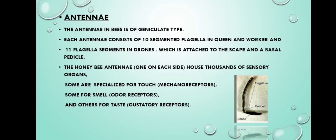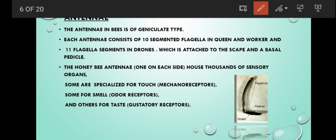Antenna: the honeybee antenna is geniculate type. Antenna consists of scape, pedicel, and flagella. Flagella segments vary in drones, queens, and workers. There are 11 flagella segments in drones, but in queen and worker there are 10 flagella segments.